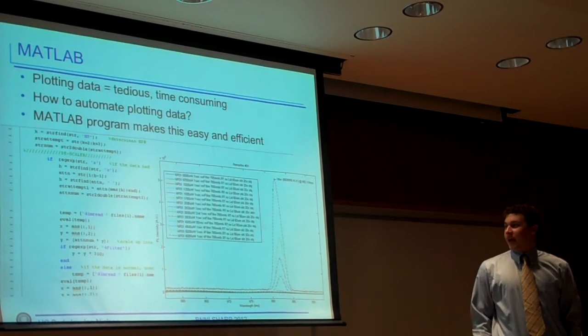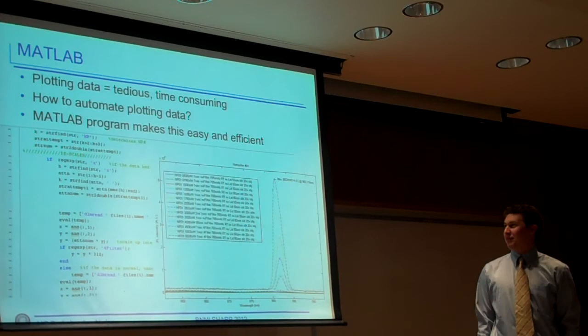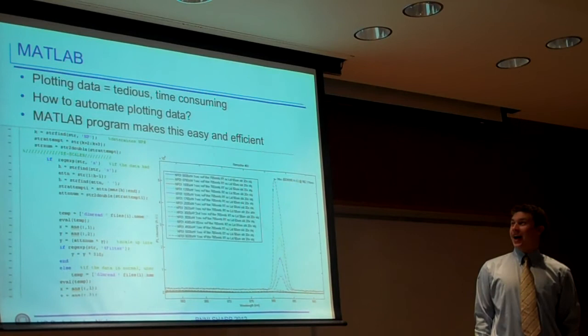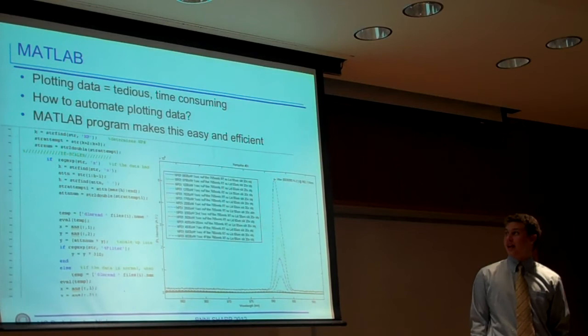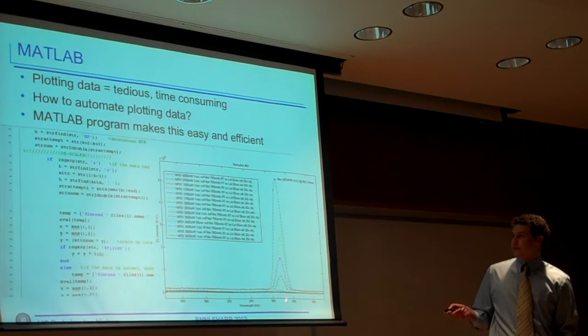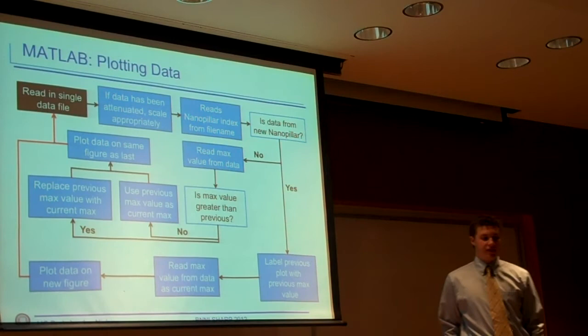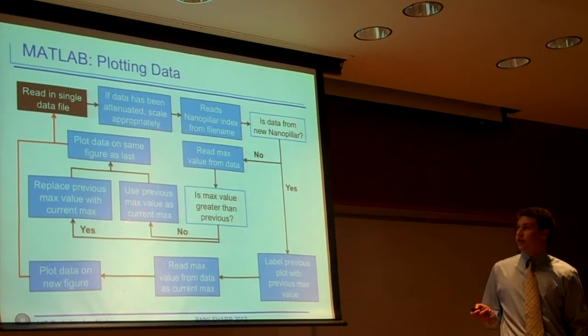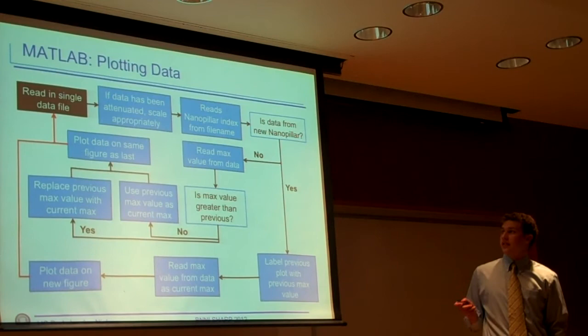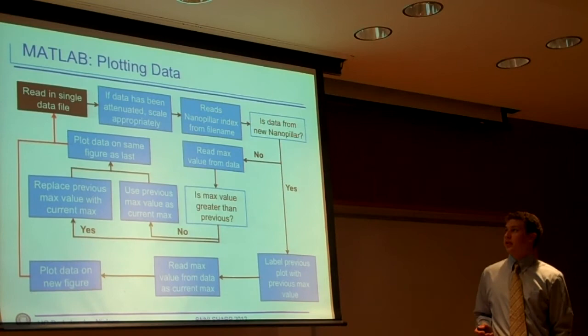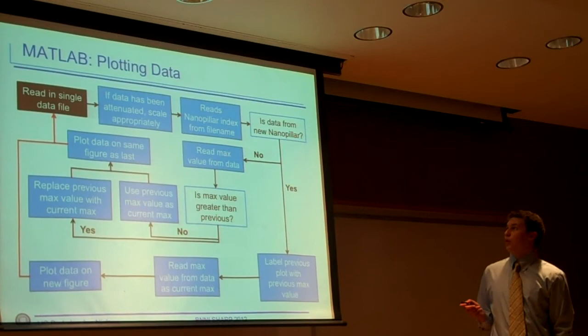After gathering all that data, the format of plotting it is really tedious and annoying. What I did, I created a program that automatically plots and analyzes the data. As you can see here, there's just a little bit of code, and your PL plot of what the data would look like. This is just a simple flowchart of what the first part of my program does. You have all your data in a single directory, and it will read in a single data file at a time. If it has been attenuated by one of the filters, it will scale it appropriately, based off of the name. It will state if it has been attenuated, and it will read the nanopillar index. Then, if it's from a new nanopillar, it will start a new figure.